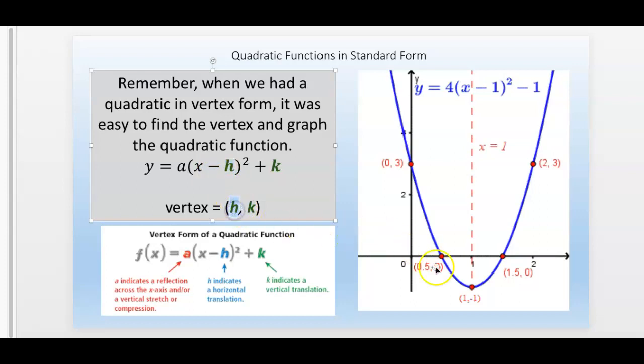Because remember in this case, h is 1. So this would be written as x minus 1. We always write it the opposite. And if h was negative 1, this would say x plus 1. And the k is always exactly as it reads because that just says plus k.